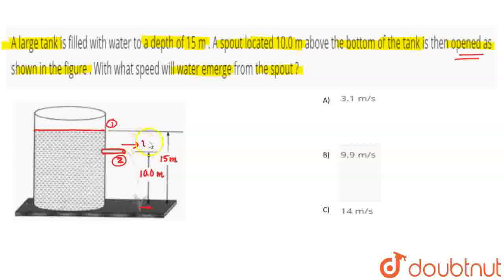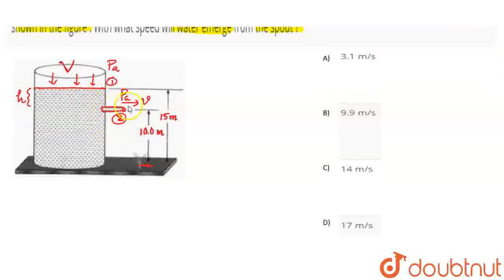When we have section 2, section 2 is coming out from the spout. Section 1 is at the top surface. Both section 1 and section 2 are exposed to the atmosphere. Now we can see the cross section area for this spout, which we can call small a. And this is the open section, the cross section area, which we can call capital A.